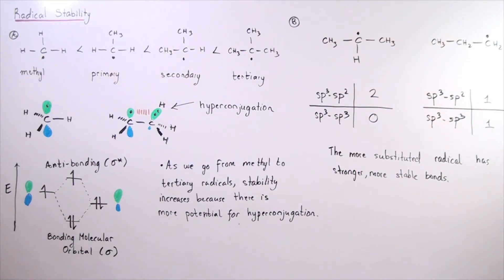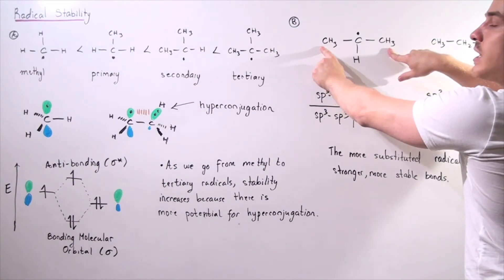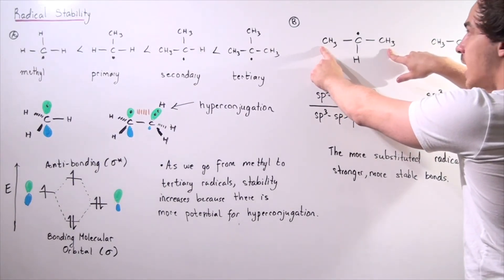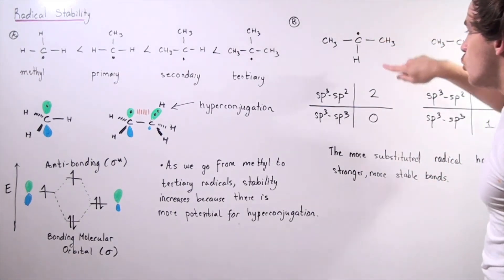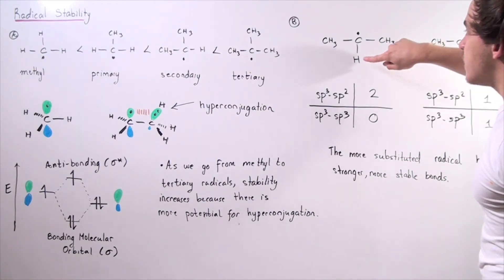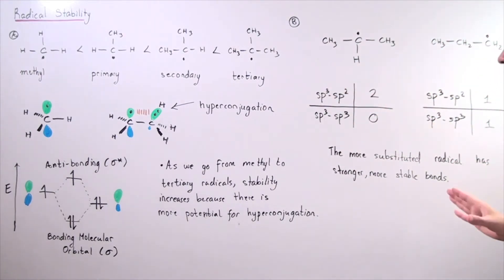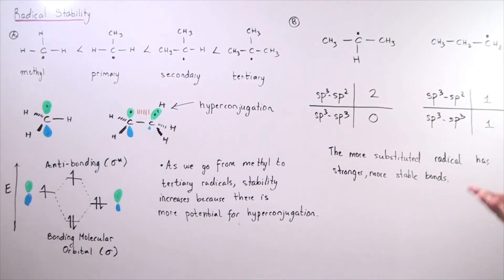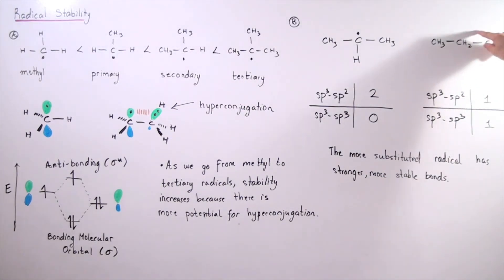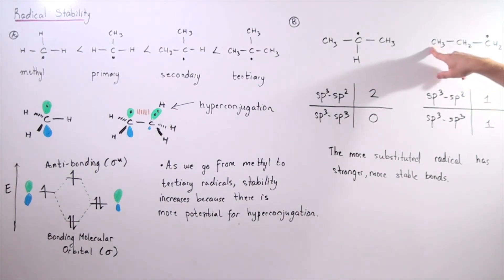We're counting sp3-sp2 hybridized bonds. In the secondary radical, the two outer carbons are each attached to four atoms, so they're sp3 hybridized, while the central carbon is approximately sp2 hybridized — giving us two sp3-sp2 hybridized bonds and zero sp3-sp3 bonds. In the primary radical, there is only one sp3-sp2 bond, and the second carbon-carbon bond is between two sp3 hybridized atoms — giving us one sp3-sp2 and one sp3-sp3 bond.